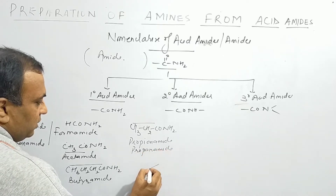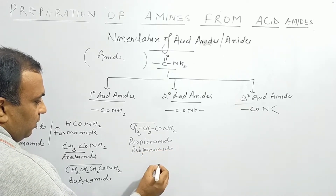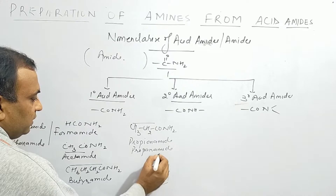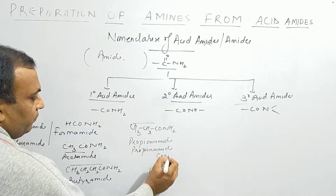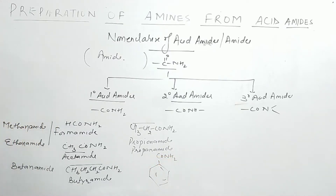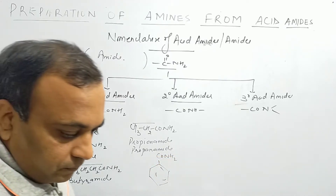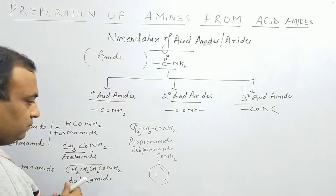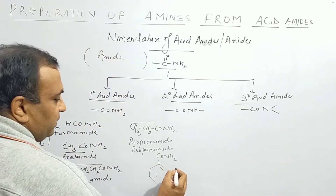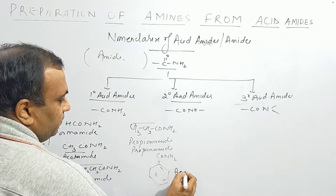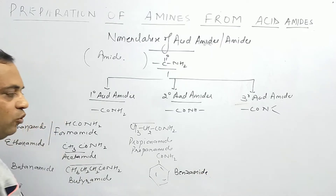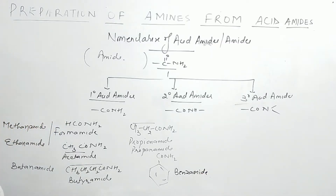One more example: if we add Benzene to CoNH2, this is written as Benzamide. Benzamide is considered to be both the common name and the IUPAC name.